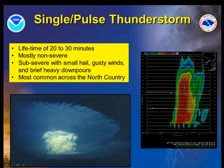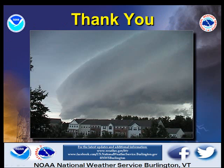The next type of thunderstorm we will discuss is the single cell thunderstorm. Single cell thunderstorms have a lifetime of only 20 to 30 minutes and typically produce localized very heavy rainfall, small hail, and brief gusty winds. Thank you for watching this brief presentation on our 2015 Sphere Weather Awareness Campaign.